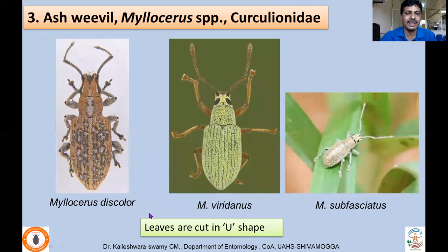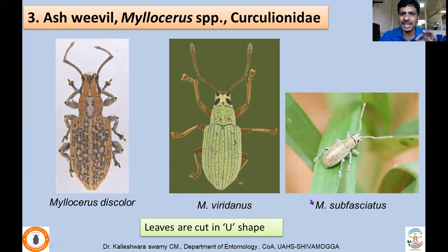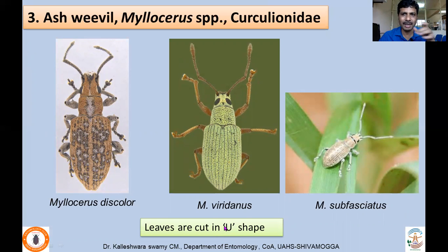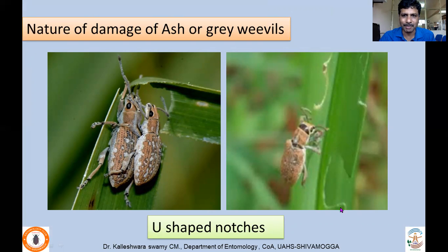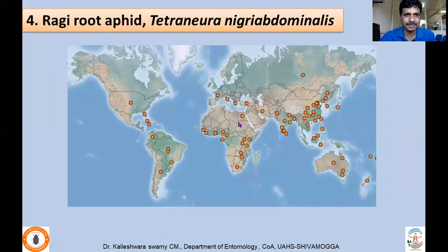The next pest is Myllocerus species (Curculionidae), with a wide host range — including Myllocerus discolor, Myllocerus viridanus, and other species. The very characteristic damage is that leaves are cut in a U-shape. The eggs are laid in soil and the grubs feed on roots. In ragi, damage caused by the grubs is actually quite negligible compared to crops like brinjal, where it is considered a serious pest. The U-shaped leaf cuts by the adults — known as grey weevils — are the main visible damage.